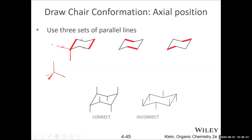Equatorial — like the equator. Axial — because this bond is parallel to the axis of the hexagon. If you look from above, the molecule looks like a hexagon, and the axial bond points along that central axis. Equatorial bonds are parallel to ring bonds; axial bonds are not parallel to any ring bond.